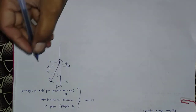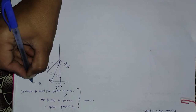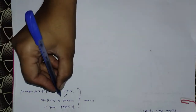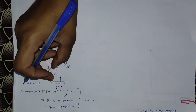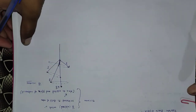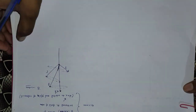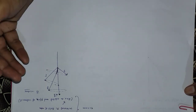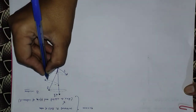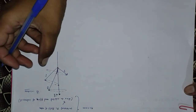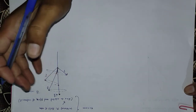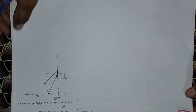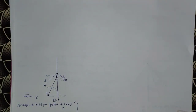Now we increase the strength of the field — how much? Up to the internal magnetic field of the atom. When B is increased to this level, the coupling of L and S, which gives J, starts to break. As we increase further, the LS coupling completely breaks. At that point, L and S will separately precess about B.